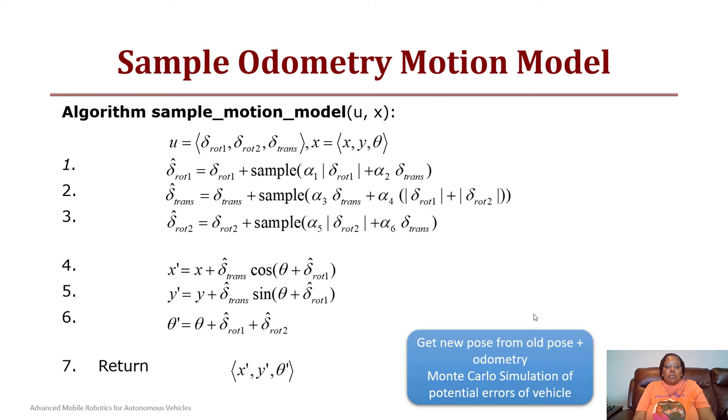The algorithm for doing this would be: for the sample motion model, the inputs are going to be delta rot 1, delta rot 2, and delta trans. Our x is going to be x, y, theta. Then you're going to have an approximation with the error of delta rot 1, delta trans, and delta rot 2. Then you're going to have x prime equals x plus the error values times the cosine of theta plus delta rot 1. Y prime is y plus delta trans times the sine of theta plus delta rot 1. Then theta prime is theta plus delta rot 1 plus delta rot 2.